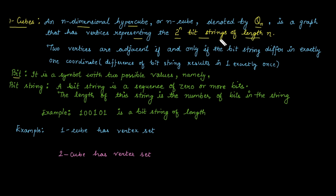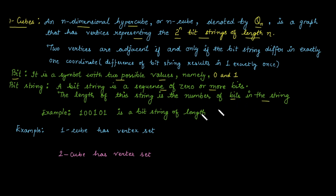A bit is a symbol representing the 2 possible values, namely 0 and 1. A bit string is a sequence of zero or more bits — that is, a sequence of 0s and 1s. The length of a bit string is the number of bits in it. For example, 1 0 0 1 0 1 is a bit string of length 6.